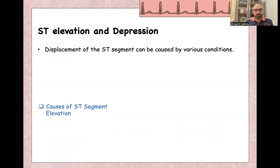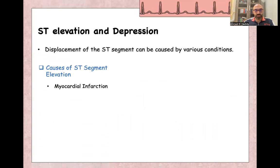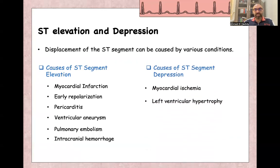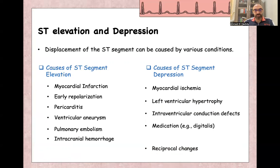For the differential diagnosis of ST elevation, there are many other causes besides myocardial infarction, including early repolarization, pericarditis, ventricular aneurysm, pulmonary embolism, and intracranial hemorrhage. For ST depression, other causes include myocardial ischemia, left ventricular hypertrophy, interventricular conduction defects, and medications like digitalis, which causes a characteristic Salvador Dali ST segment shape. Reciprocal changes from myocardial infarction will also appear as ST depression.